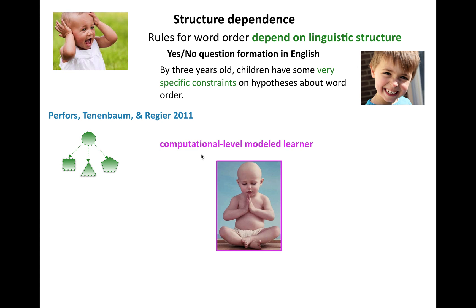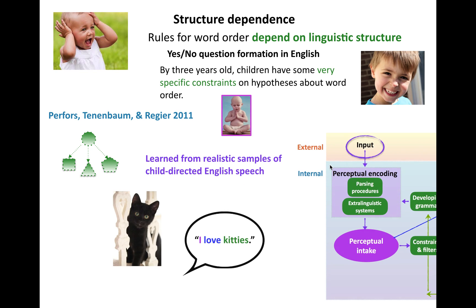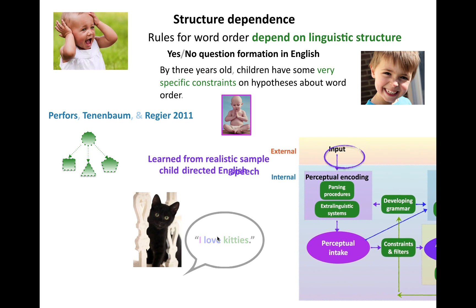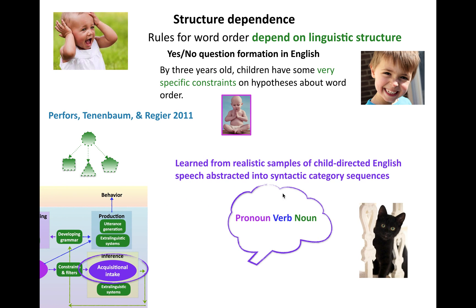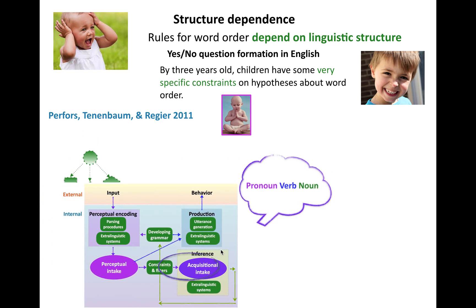Those other data might cause children to prefer structured representations in their over-hypothesis. This idea was investigated in a paper by Perfors, Tenenbaum, and McGuire in 2011 using a computational-level model — an idealized learner. This learner learned from realistic samples of child-directed English speech that had been abstracted into syntactic category sequences. They assumed that their learner had already figured out what categories things were, but that's all you get — you don't get any additional structure. You just get these sequences and are supposed to figure out from them what kind of representations you prefer.